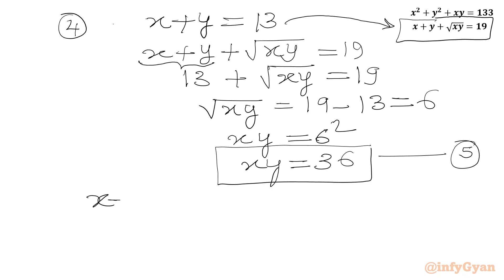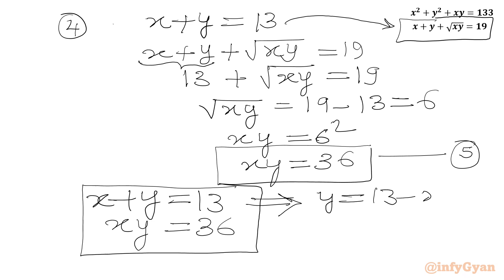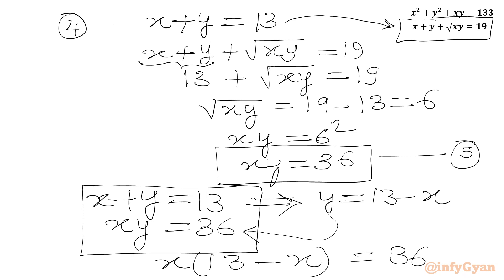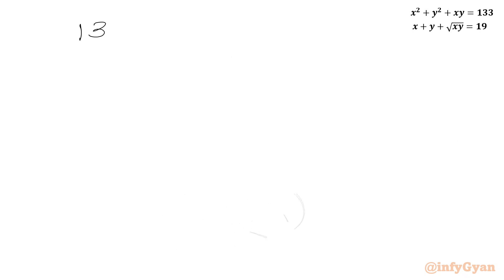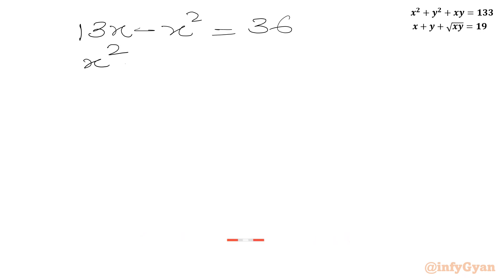We now have the system: x plus y equals 13 and xy equals 36, and we need to find x and y. From equation 4, y equals 13 minus x. Substituting into equation 5: x times 13 minus x equals 36, which expands to 13x minus x squared equals 36. Rearranging gives the quadratic equation x squared minus 13x plus 36 equals 0.